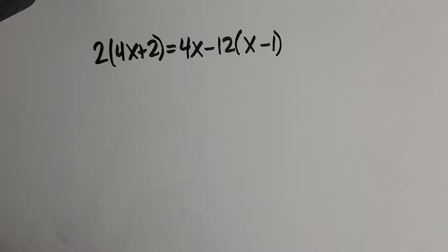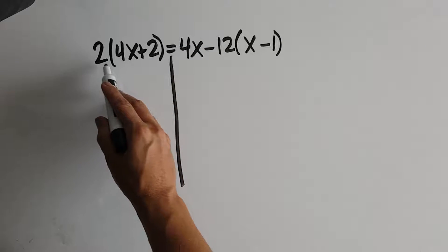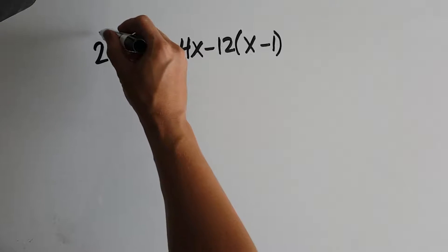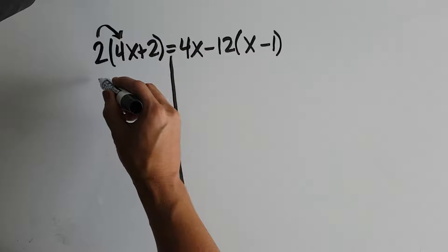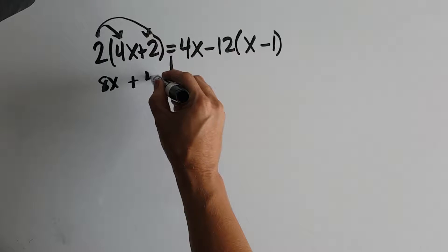In our second example, we can see that we don't have simplified sides. So on the left side, this says 2 times that quantity. So we're actually going to distribute our 2. 2 times 4x gives us 8x. 2 times 2 gives us 4.